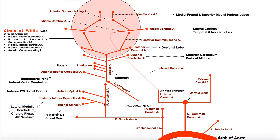After the PICA branches off the vertebral artery, it gives off a branch called the posterior spinal artery, which supplies blood to the posterior one-third of the spinal cord. Further up the vertebral artery, there's also the anterior spinal artery, which supplies the anterior two-thirds of the spinal cord. These branches come off both the left and right vertebral arteries.